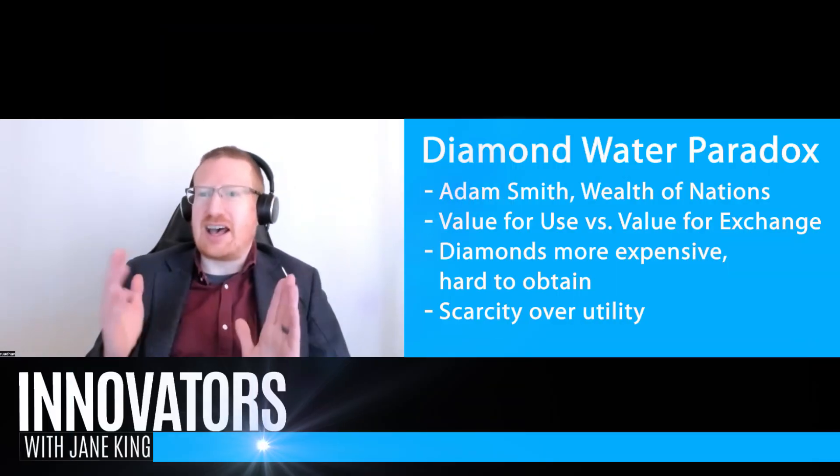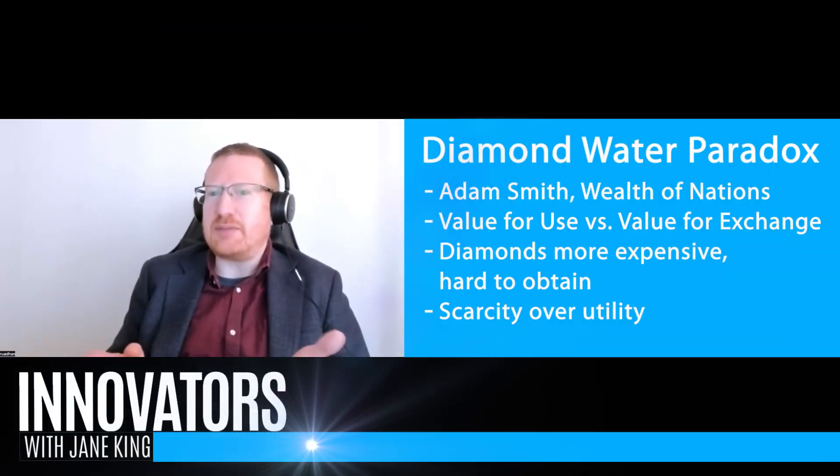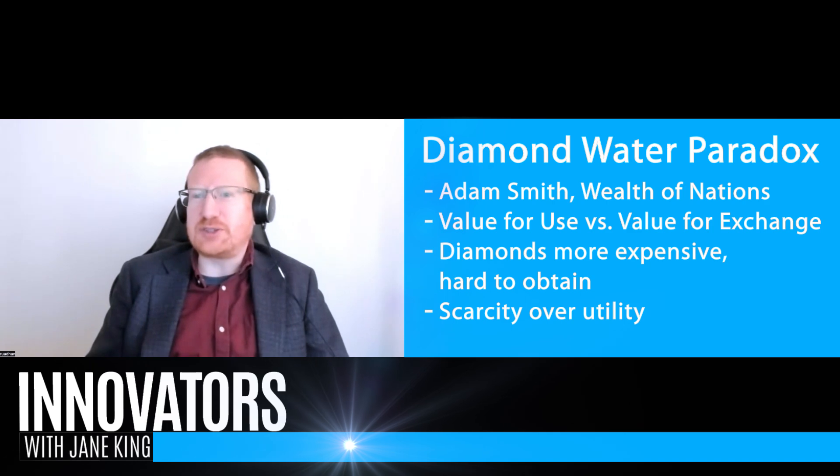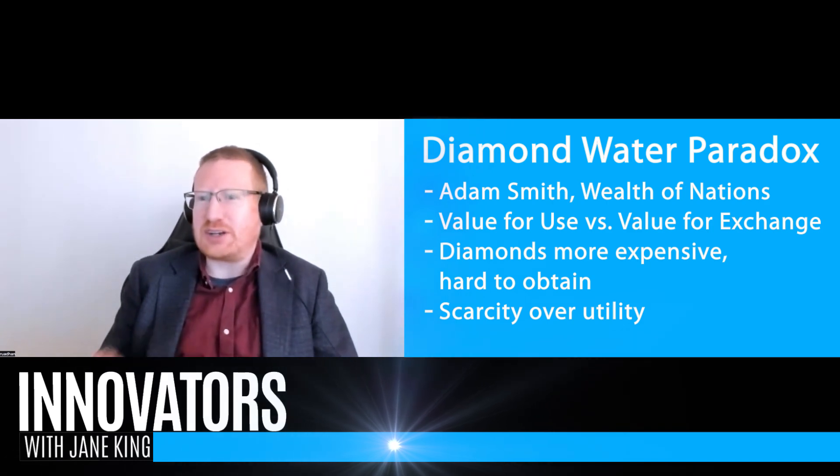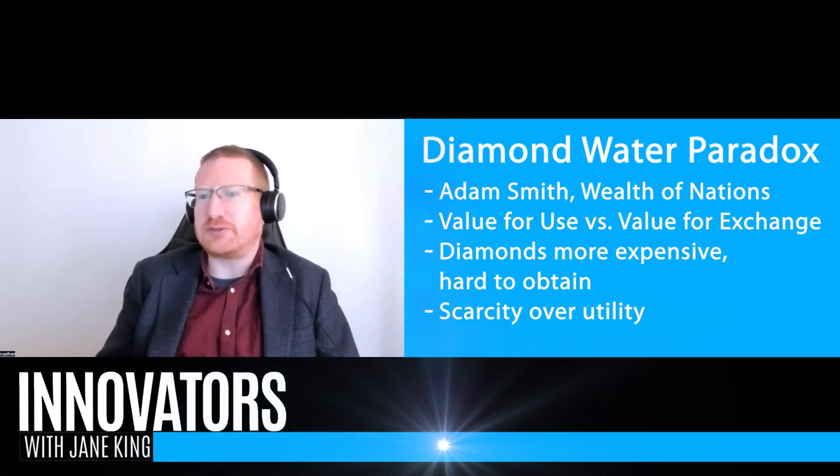The example he gave was diamonds and water. Water is obviously the most useful thing, but it has the lowest value for exchange — you can't really buy anything with water because it doesn't have a high market price. On the other hand, diamonds have very little use, especially in his day, yet they're much more expensive.